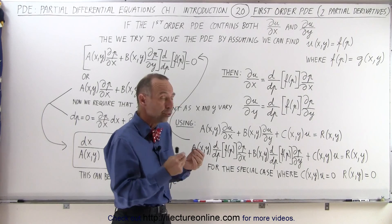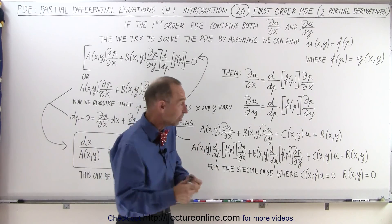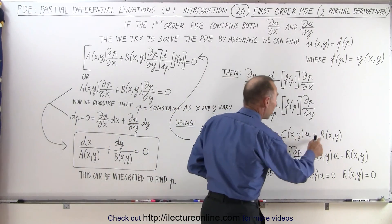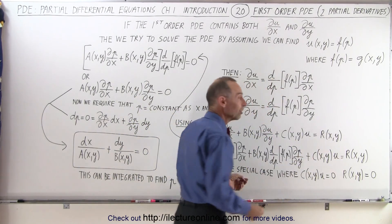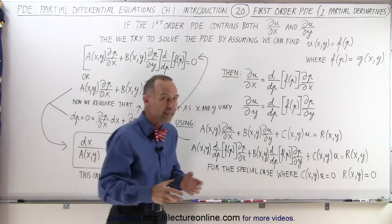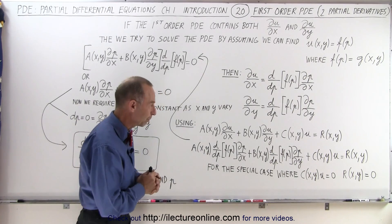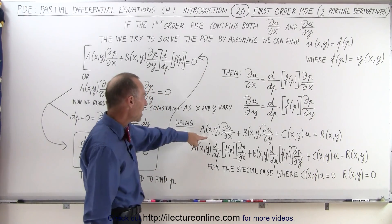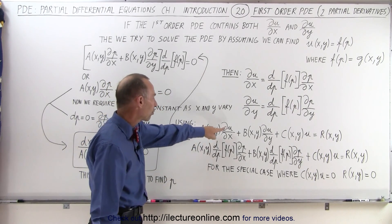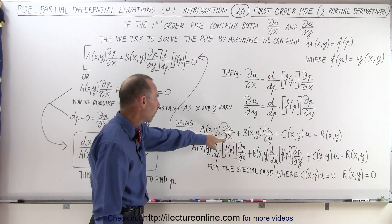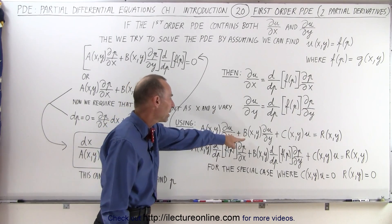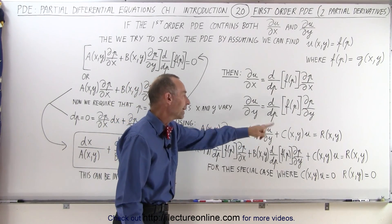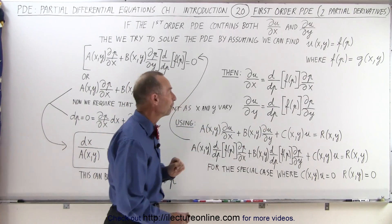We're going to use the special case where C and R are going to be zero to make it somewhat workable. So in this case we're going to get A times the partial of U with respect to X plus B times the partial of U with respect to Y equals zero.